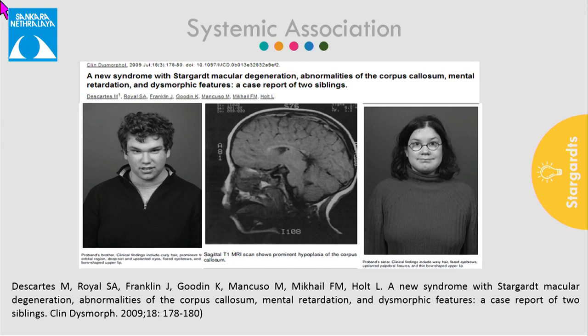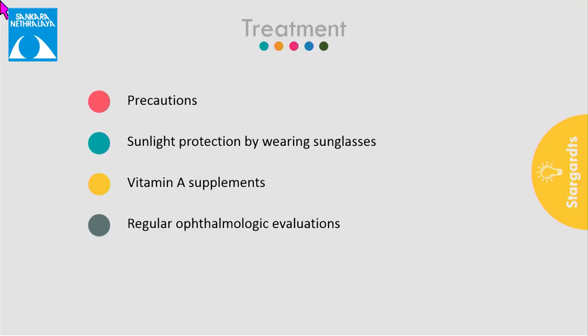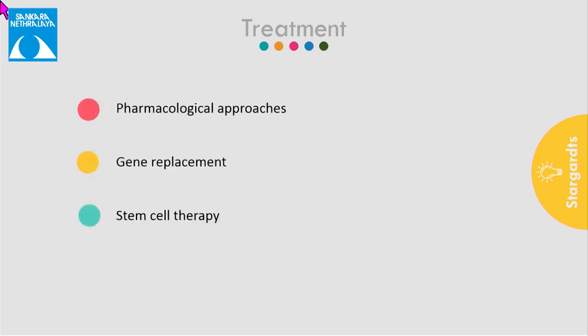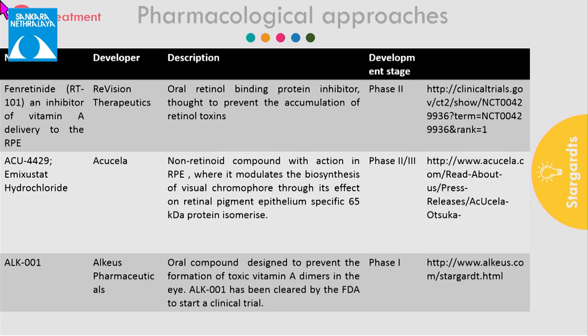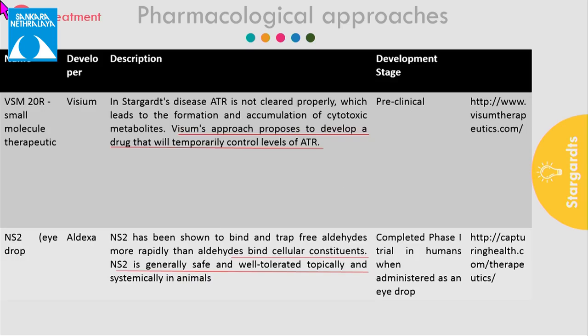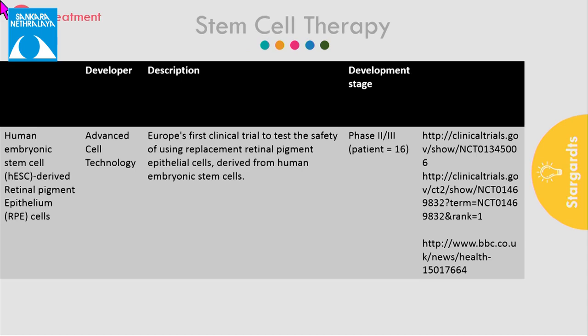No systemic association is known to occur with Stargardt's disease, but there is one case report of two siblings with corpus callosum abnormality associated with mental retardation and Stargardt's disease. Patients should be instructed to avoid sun exposure and vitamin A supplements. Various treatment options have been tried: pharmacological agents that modulate the visual cycle including phenretinide, ACU-4429, and ALK-001. NS2 eye drops have also been tried. Stem cell therapy using human embryonic stem cell-derived RPE cells transplanted subretinally in patients with severe advanced Stargardt's disease has also been investigated.